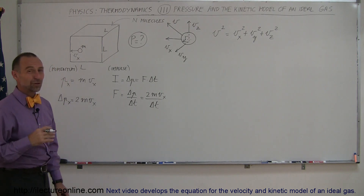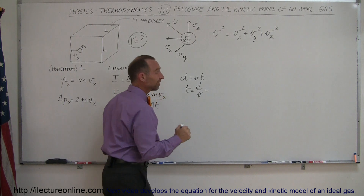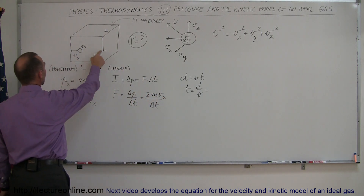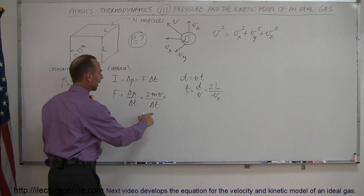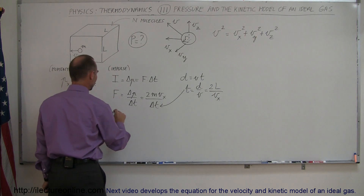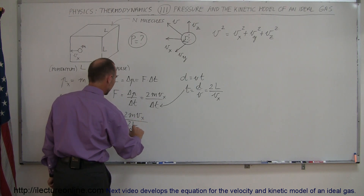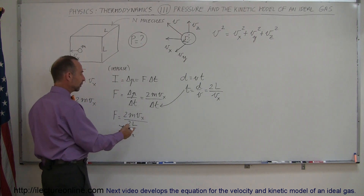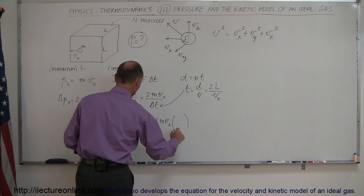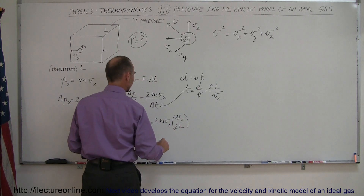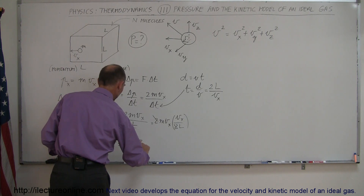To find delta t, we use distance equals velocity times time, or time equals distance over velocity. The molecule travels twice the length of the box, so the distance is 2L and the velocity is v_x, giving delta t equals 2L divided by v_x. Substituting into the force equation: F equals 2mv_x divided by (2L/v_x), which is the same as 2mv_x times v_x over 2L. The twos cancel, so force equals mv_x² divided by L.